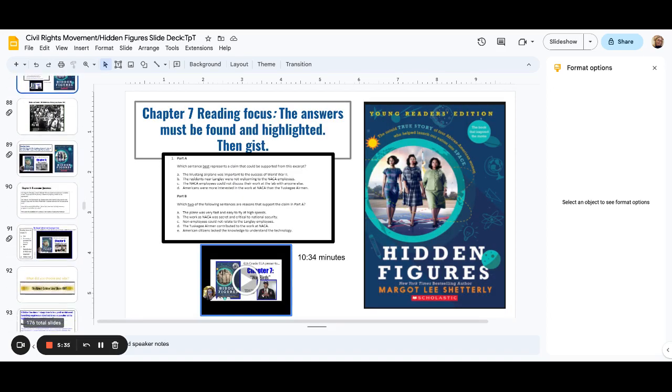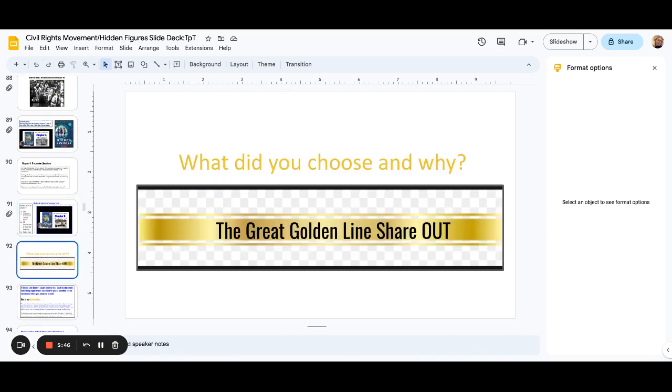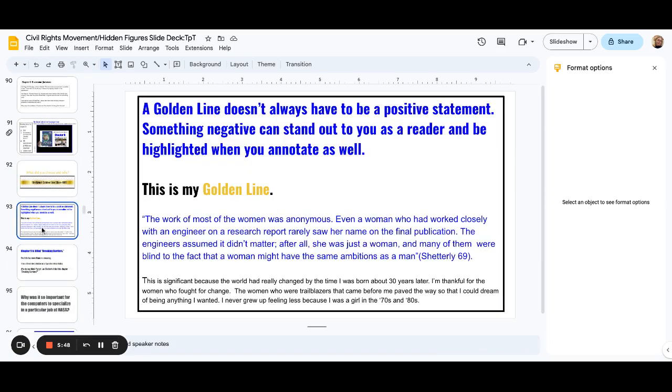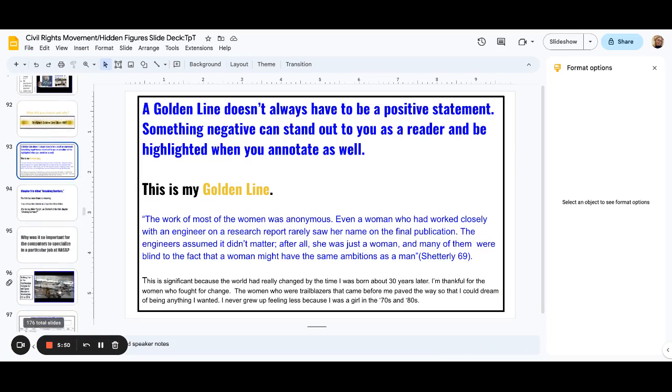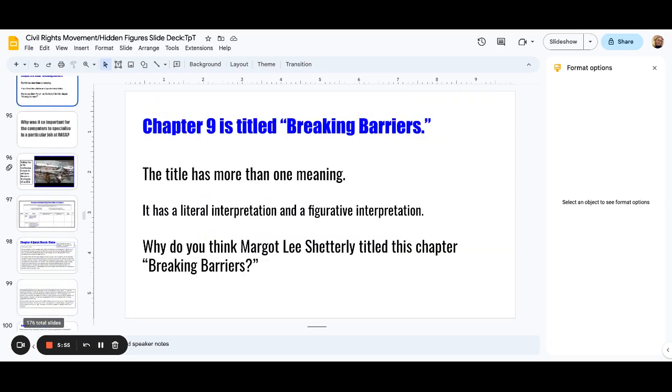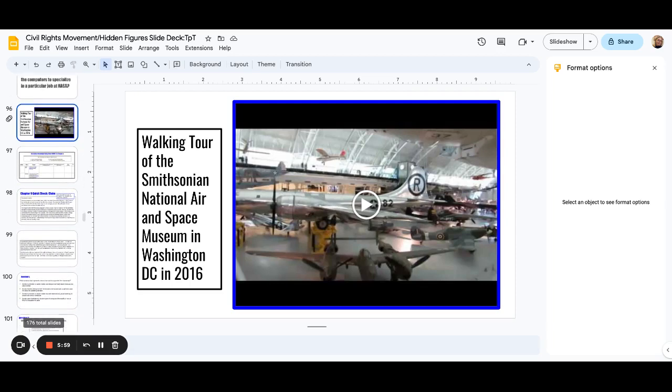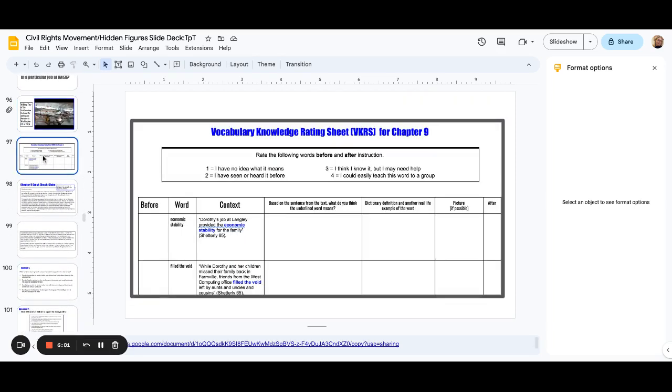Cool video clips that I found. Some discussion questions with reading of the chapter. Then the great golden line scavenger hunt. There's lots of, quote unquote, scavenger hunts where they have to look for specific things while they're reading. Golden line is just what line stands out to them. And then an example of what golden lines are. Discussing the title of Breaking Barriers. A tour of the Smithsonian National Air and Space Museum in 2016. More vocabulary and context. This is throughout the book.